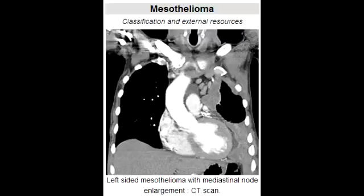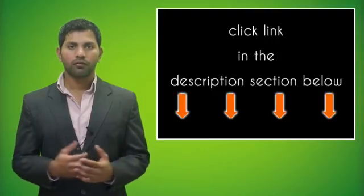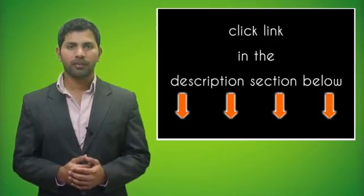A few additional notes to remember about mesothelioma: there is a high mortality rate. And secondly, along with asbestos exposure, if you're also a smoker, the risk of getting mesothelioma is much higher.